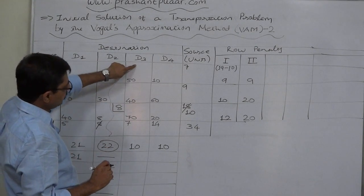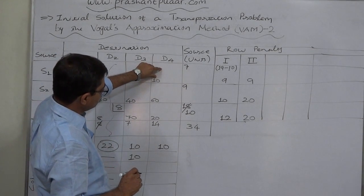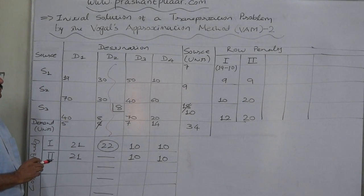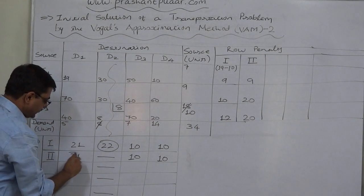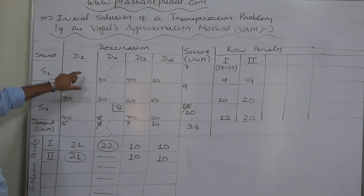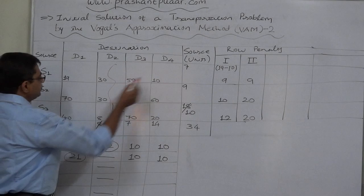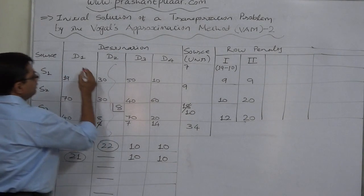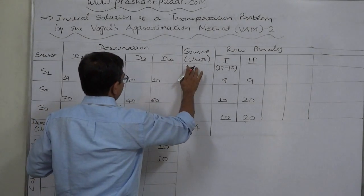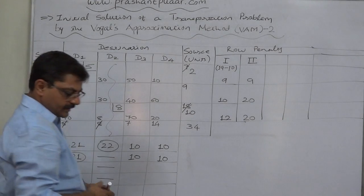D2 has been cancelled. For column D3, the least cost is 40 and immediate higher is 50, so the penalty is 10. For column D4, the least cost is 10 and immediate higher is 20, so the penalty is 10. Comparing all penalties — 9, 20, 20, 21, 10, 10 — the highest is 21, belonging to column D1. In D1 the cell with the least cost is S1D1 with cost 19. We allocate the lower of demand (5) or supply (7), which is 5. The demand of D1 is satisfied; remaining supply of S1 is 2. We cancel column D1.